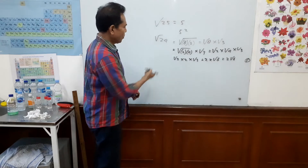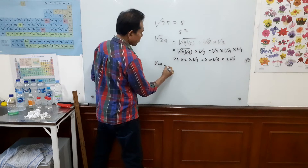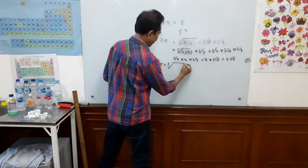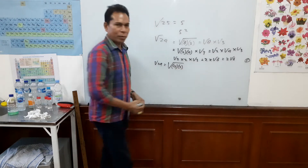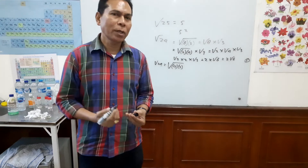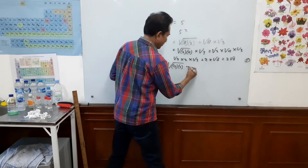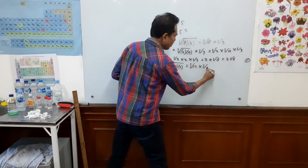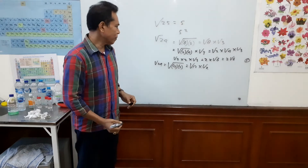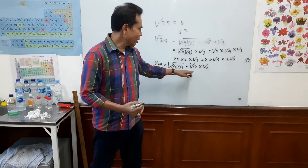We have another way to solve this kind of problem. We take 12 and 2 — we put them both under square root. So we take this out: square root 12 times square root 2. We cannot simplify square root 2 anymore, but we can still simplify square root 12.